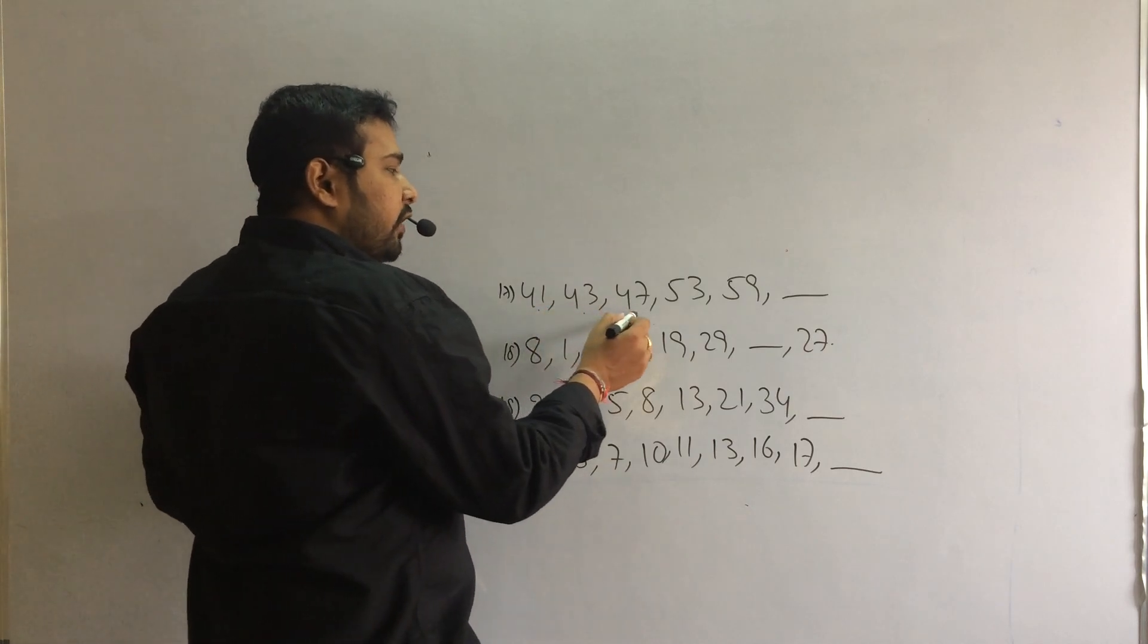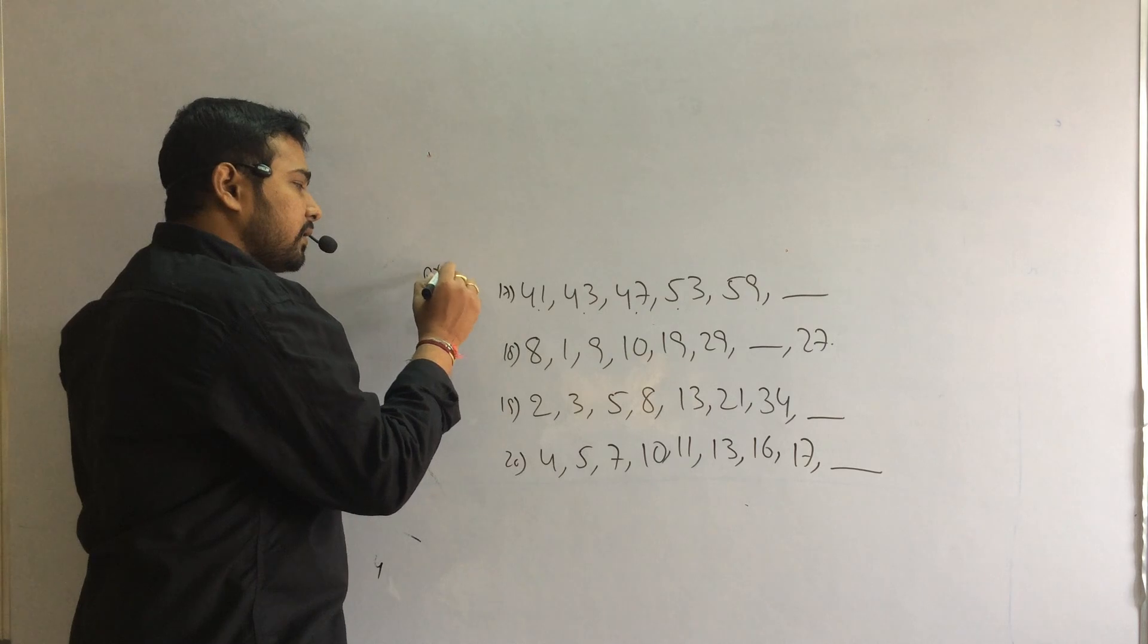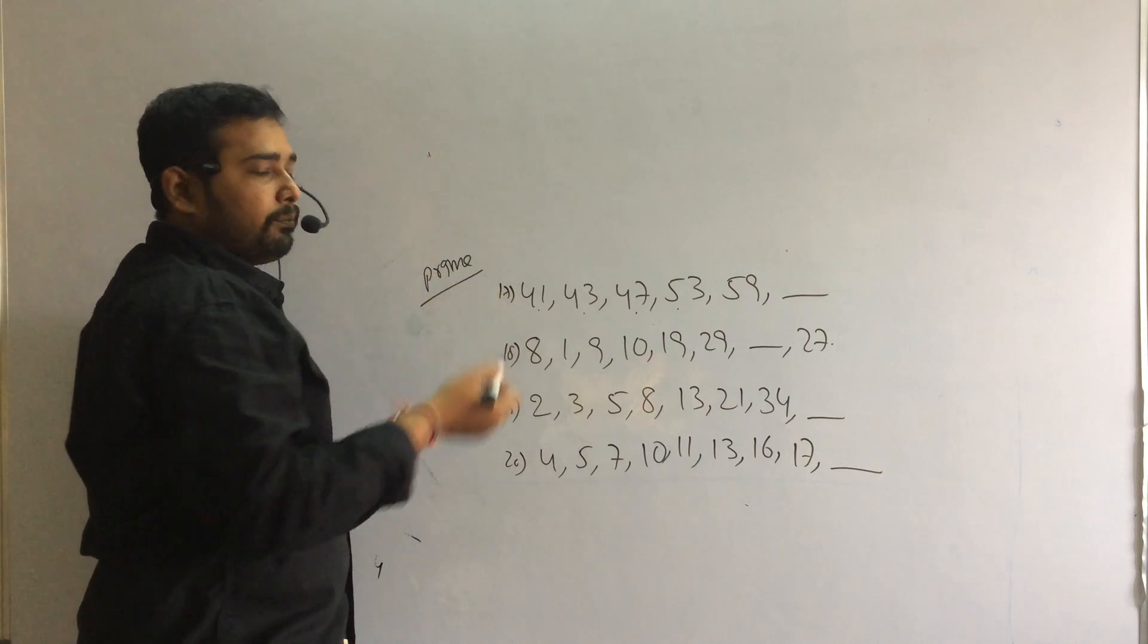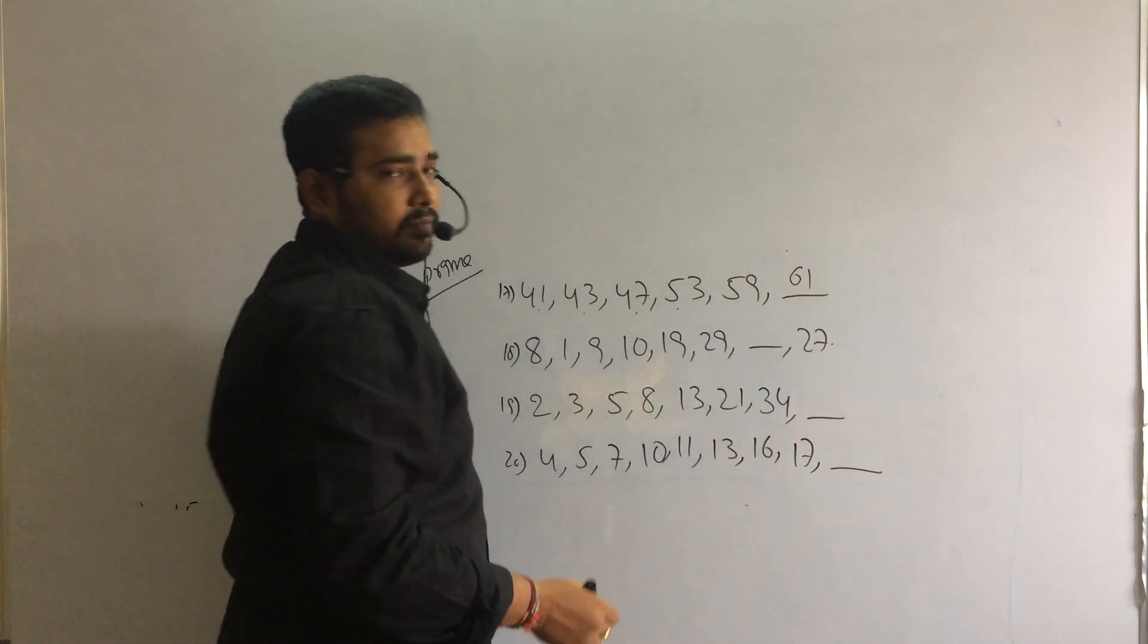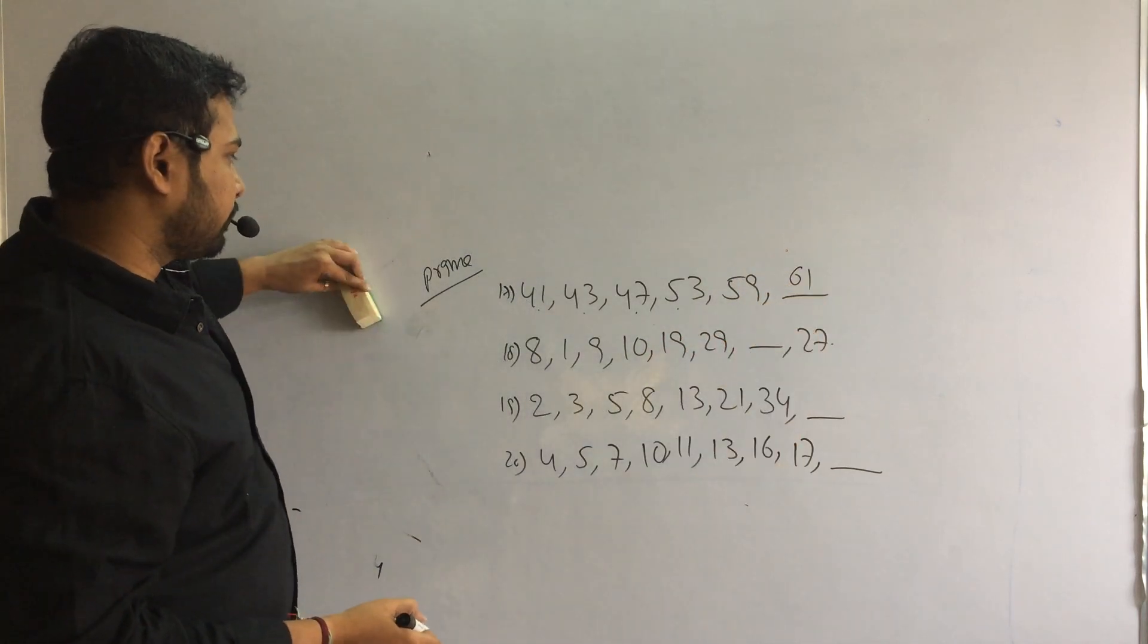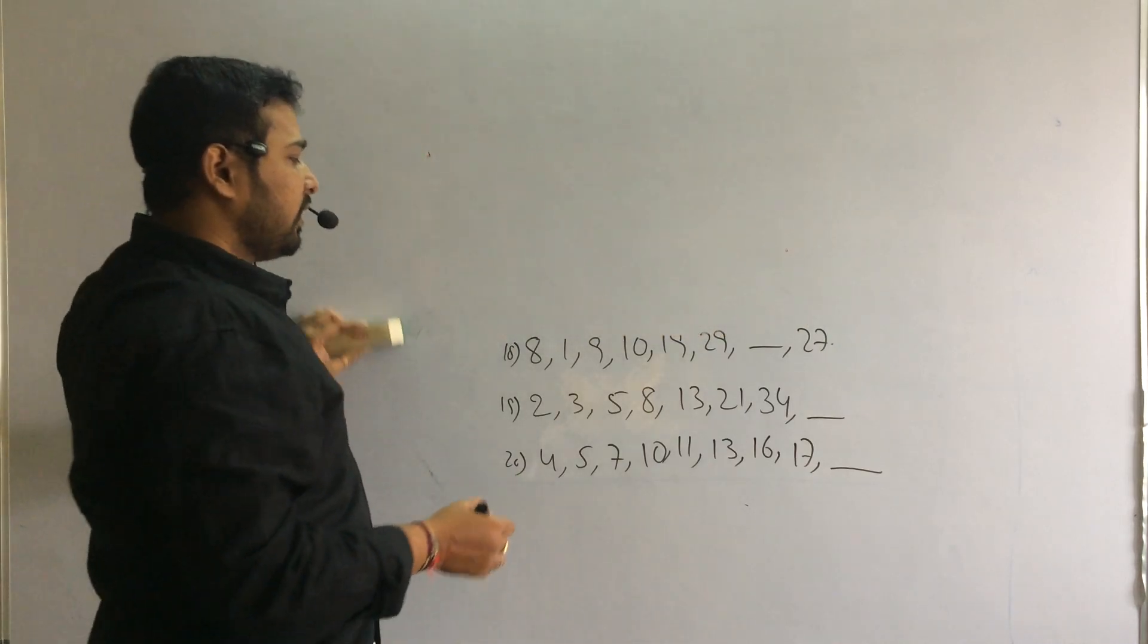41, 43, 47, 53, 59. They are prime numbers. So after 59, next prime number is 61. That's your answer. They are prime numbers. Next.